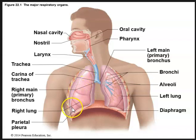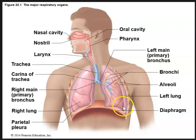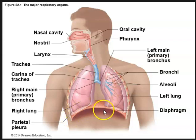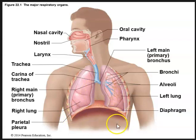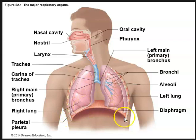We can see the right and left lungs and their different lobes. The right lung has three lobes: a superior, middle, and inferior lobe. The left lung has just two lobes: superior and inferior. We have the pleura that surrounds the lungs, and finally we have the diaphragm — a muscle that separates the thoracic cavity from the abdominal cavity, upon which the lungs sit and which aids in respiration.